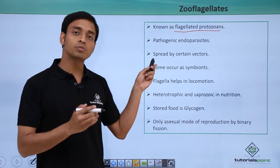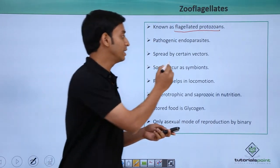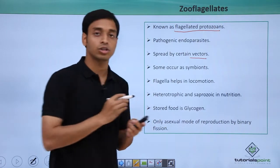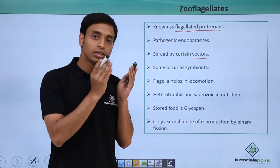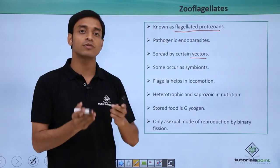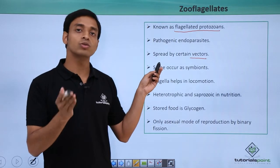These type of endoparasites can spread from one organism to another, and this is aided by the help of certain vectors. There are certain vectors which help in carrying these zooflagellates from one organism to another. So the transfer happens through vectors.